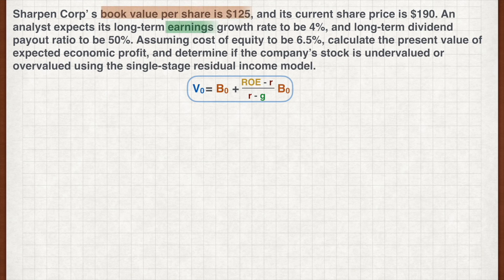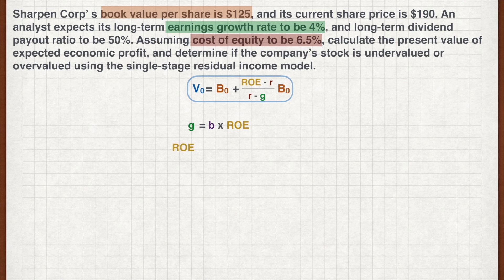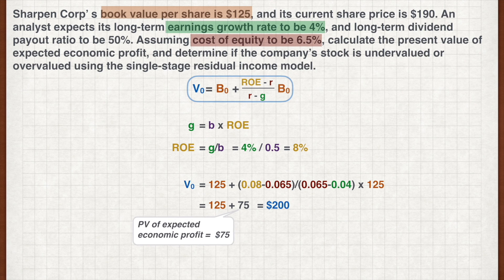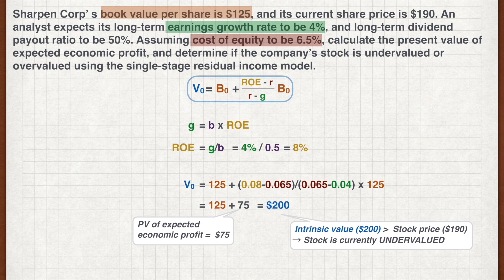We're given book value, long-term growth rate, and cost of equity. The only missing term is ROE. Since the sustainable growth rate equals the retention ratio times ROE, the long-term ROE can be estimated as the long-term growth rate divided by the retention ratio, which is one minus the payout ratio. This gives an ROE of 8%. Plugging the figures into the model, the intrinsic value is $200. The present value of future economic profits is $75, which is positive since ROE exceeds the required return. Since the intrinsic value exceeds the current stock price, the stock is currently undervalued.